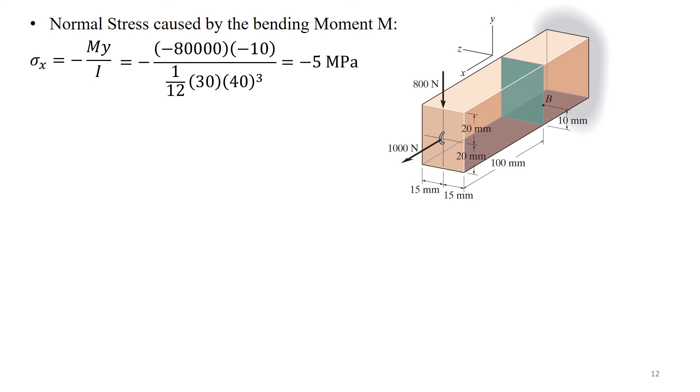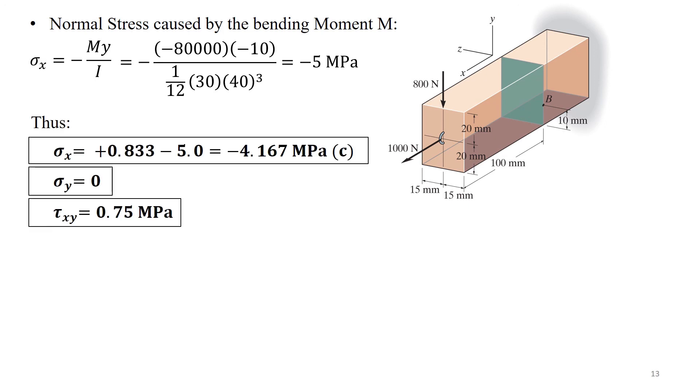Now we need to use the principle of superposition and calculate the resultant normal and shear stress components. Sigma X equals positive 0.833 minus 5.0 equals negative 4.167 MPa. The negative sign indicates that this is a compressive stress. Therefore, sigma Y equals 0, tau XY equals 0.75 MPa.